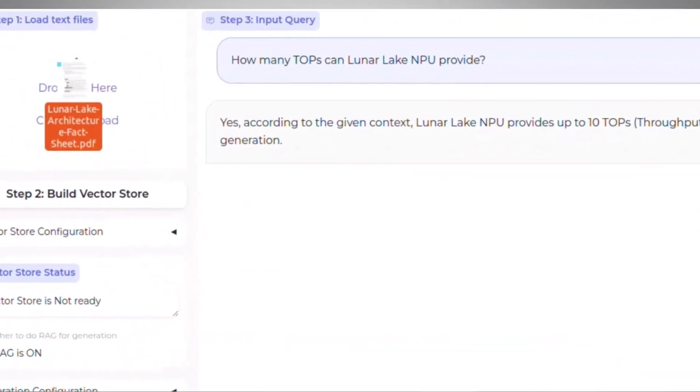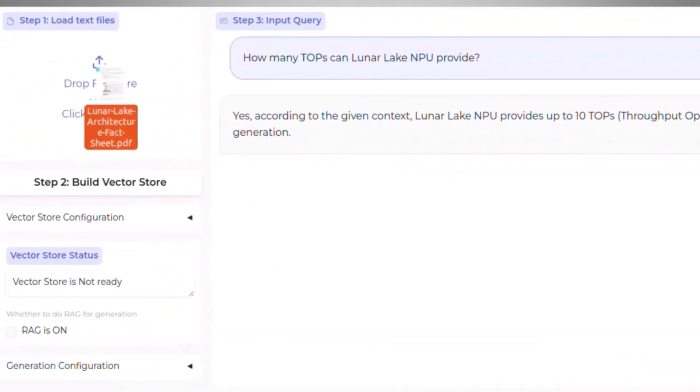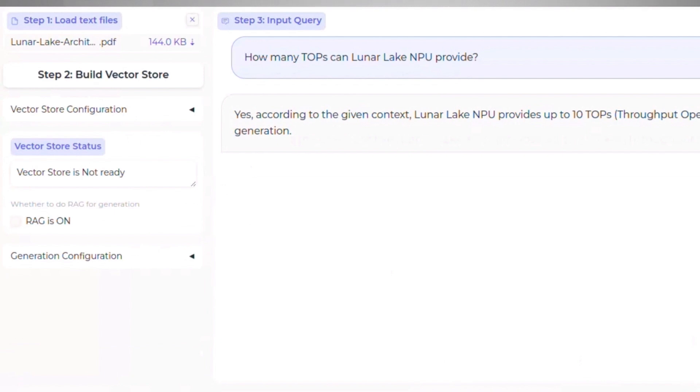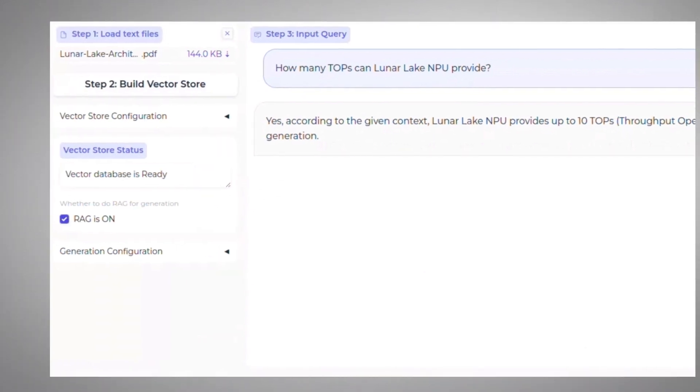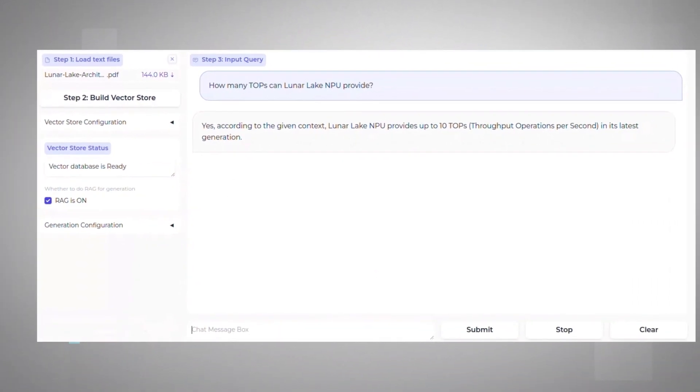Now, let's feed this document to the model. Basically, augment the knowledge of the model with all the data in this article. Process the document and use RAG and ask again.